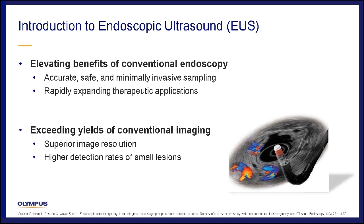EOS offers superior image resolution and higher detection rates of small lesions compared to CT, MRI, and PET scans. As a result, EOS plays a leading minimally invasive role in diagnosing, staging, and treating diseases of the esophagus, stomach, proximal duodenum, pancreas, bile duct, liver, spleen, gallbladder, left adrenal gland, and posterior mediastinum.